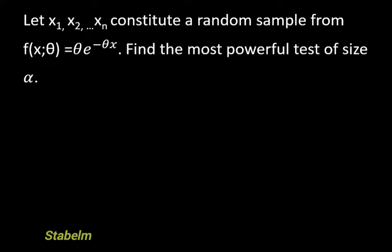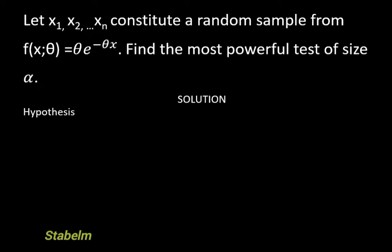Let X1, X2, ..., XN constitute a random sample from this distribution, which is the exponential distribution. Now, we're going to find the most powerful test of size alpha. The first thing we are going to do is to state the hypothesis. We are testing the null hypothesis against the alternative hypothesis.